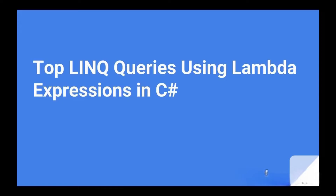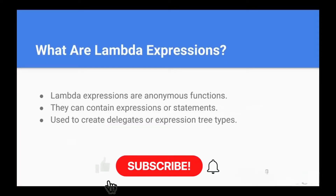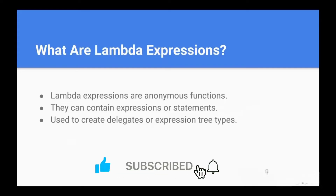Before we dive into the exciting queries, let's take a moment to understand the core concept behind them — lambda expressions. Lambda expressions are anonymous functions. They can contain expressions or statements and are used to create delegates or expression tree types. In simple terms, they are functions that don't have a name. Lambda expressions are lightweight and concise, making them a perfect fit for writing functional-style code in C#.